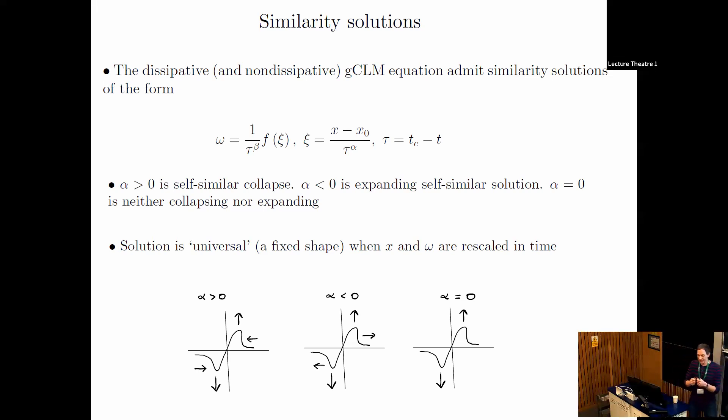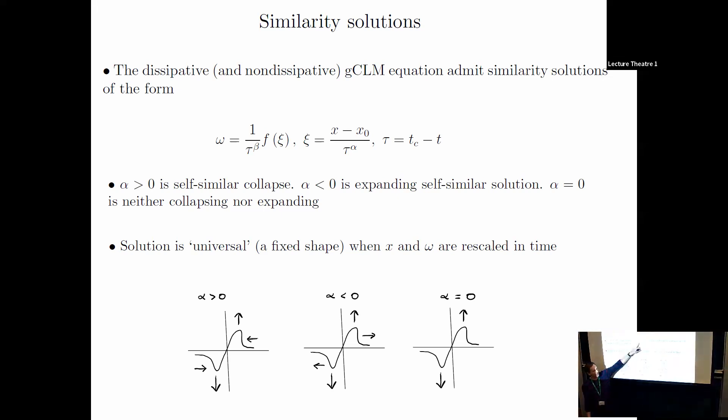These expanding solutions expand to infinity—the support expands to infinity in finite time, and the amplitude goes to infinity. I personally have never seen these before. I don't know if anyone has seen them in the same problem where varying a parameter goes from one to the other. We also find alpha equals zero solutions, neither collapsing nor expanding. The support stays the same and they just blow up.